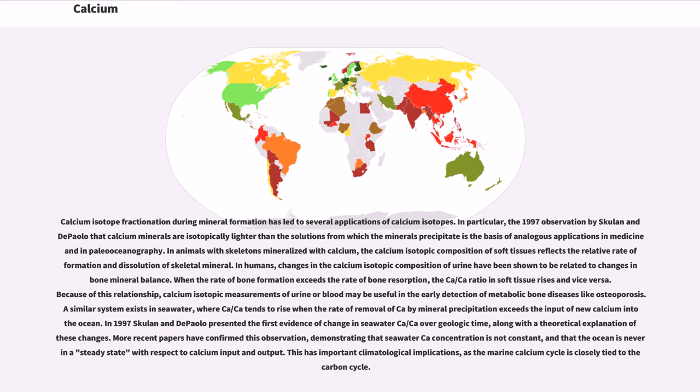In seawater, ⁴⁴Ca/⁴⁰Ca tends to rise when the rate of removal of Ca²⁺ by mineral precipitation exceeds the input of new calcium into the ocean. In 1997, Skulan and DePaolo presented the first evidence of change in seawater ⁴⁴Ca/⁴⁰Ca over geologic time, along with a theoretical explanation of changes. More recent papers have confirmed this observation, demonstrating that seawater Ca²⁺ concentration is not constant, and that the ocean is never in a steady state with respect to calcium input and output. This has important climatological implications, as the marine calcium cycle is closely tied to the carbon cycle.